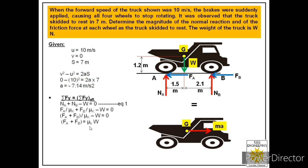Next, we apply summation Fx = summation Fx effective. In the x-direction, forces FA and FB both act towards the left, so they are considered negative. These two forces are responsible for the retardation of the truck.